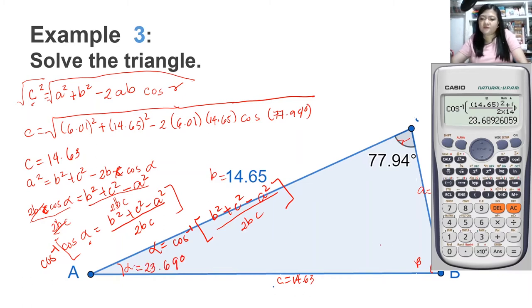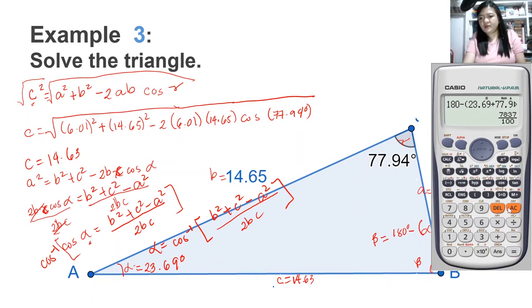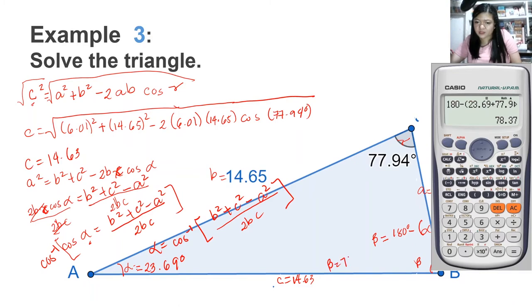Now, how are we going to find beta? Since we know alpha and gamma, beta will equal 180 minus the sum of alpha and gamma. So beta equals 180 minus 23.69 minus 77.94, giving us beta equals 78.37 degrees.